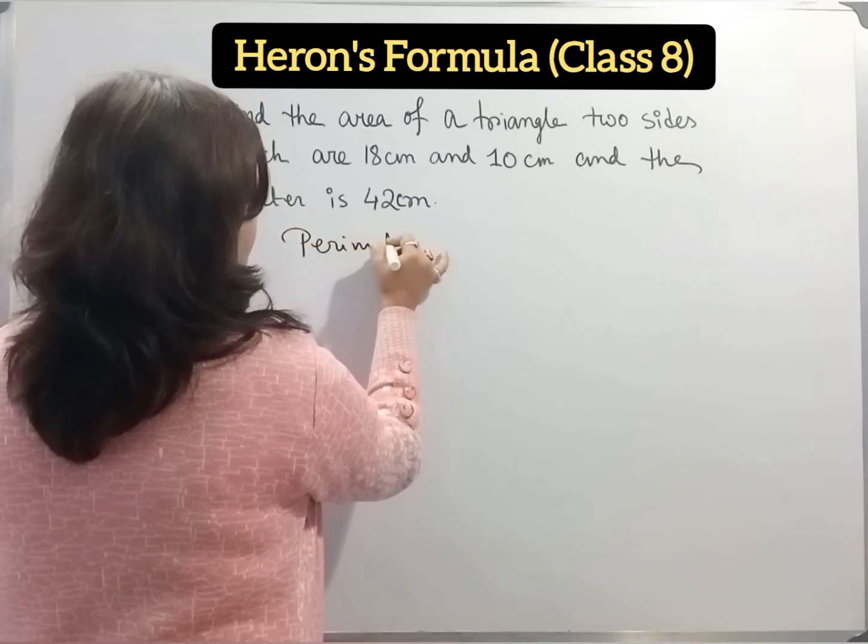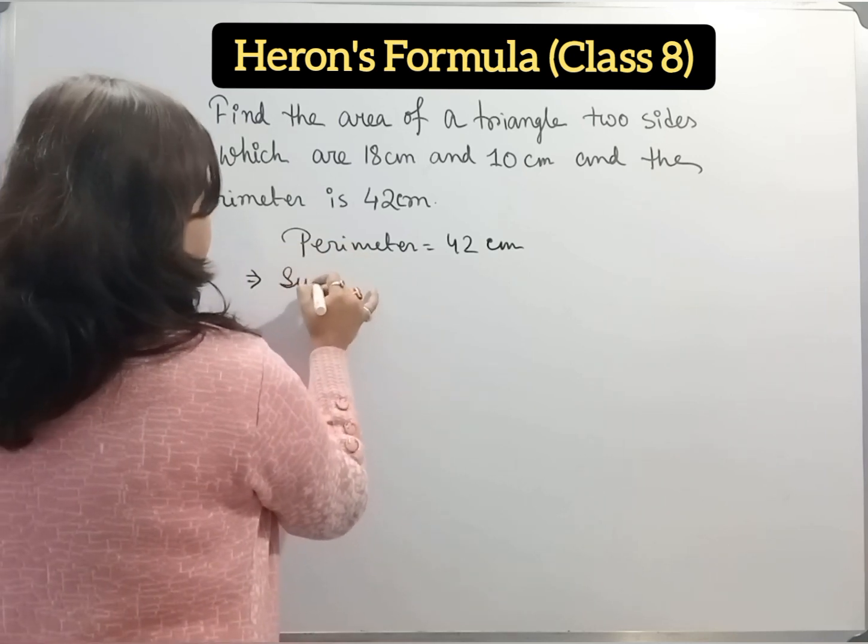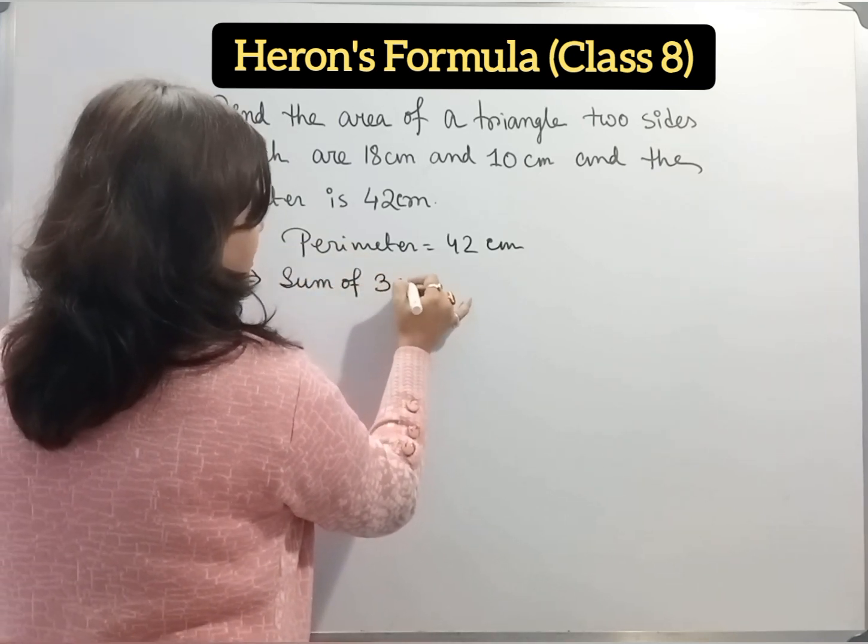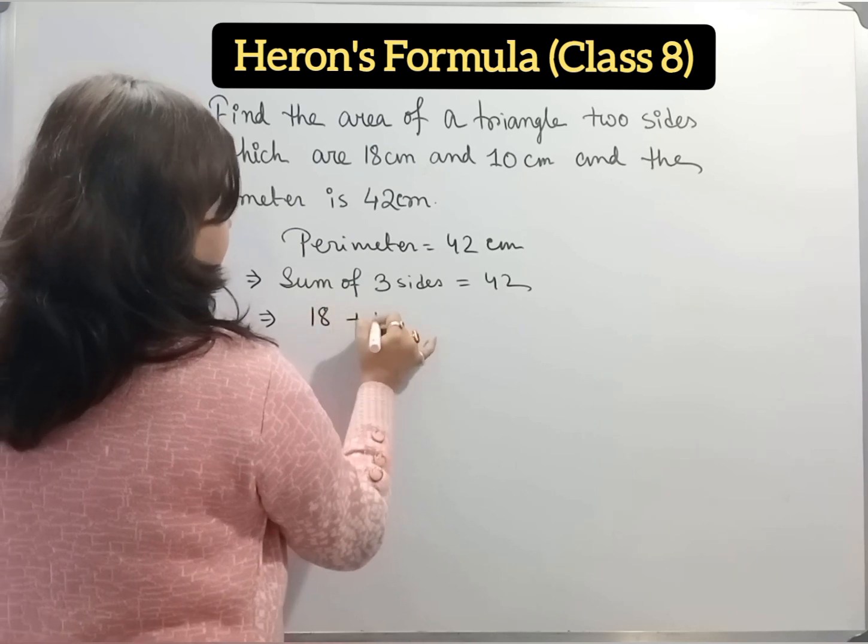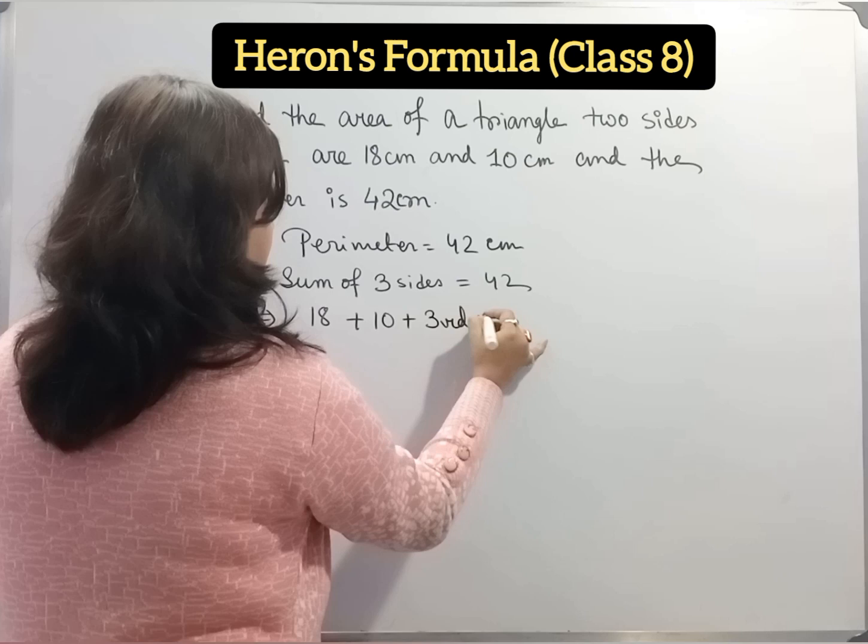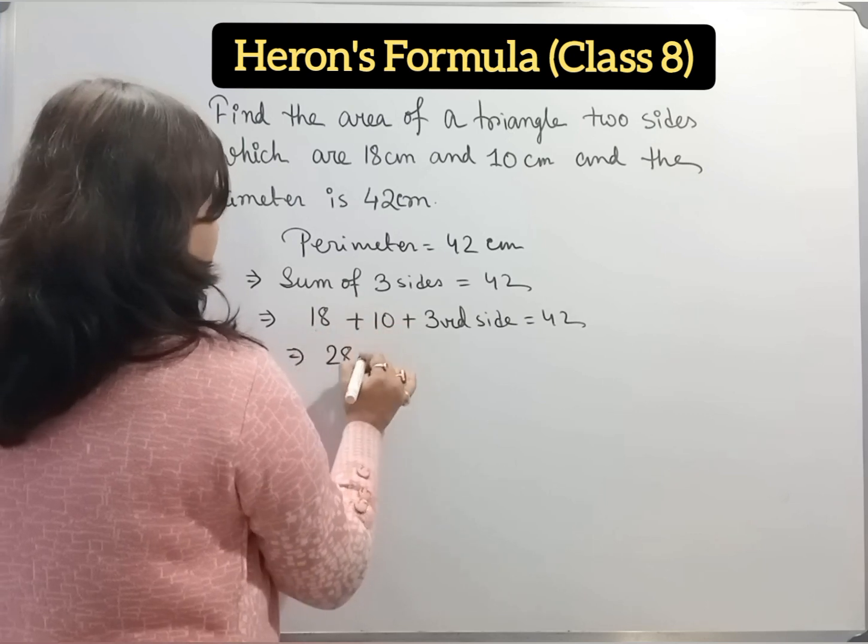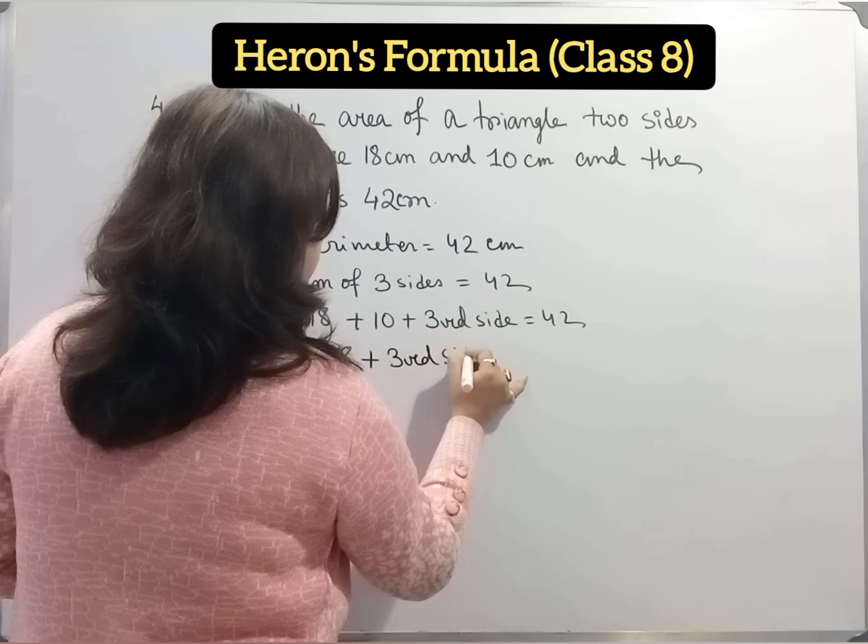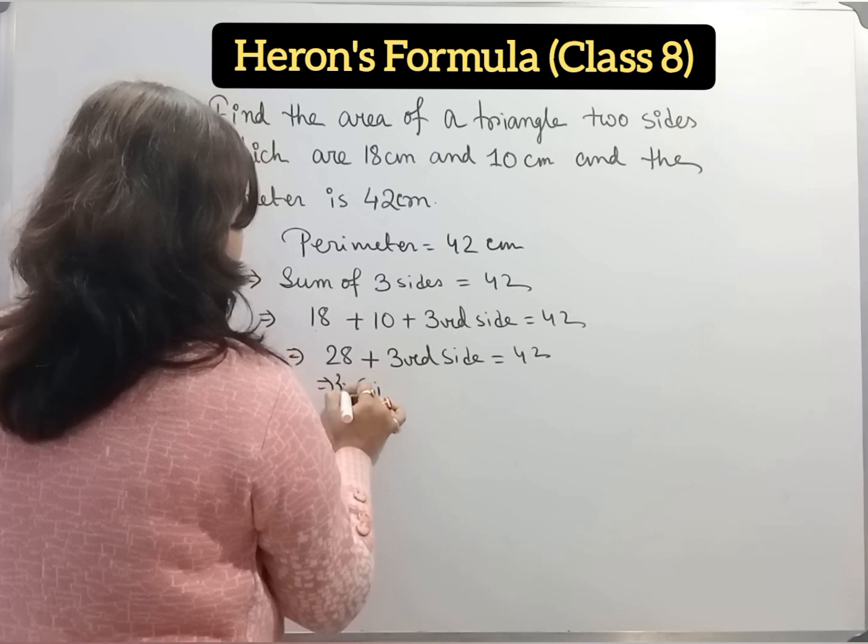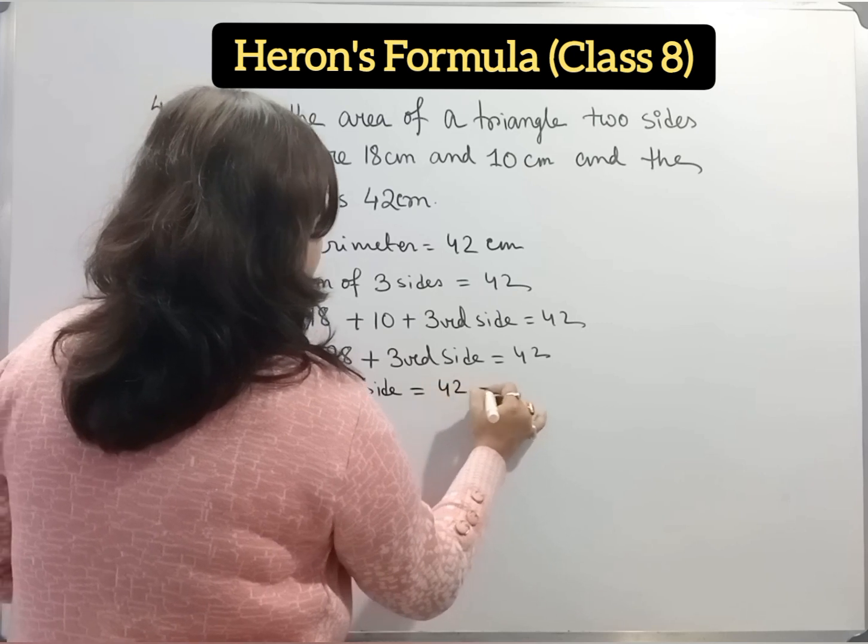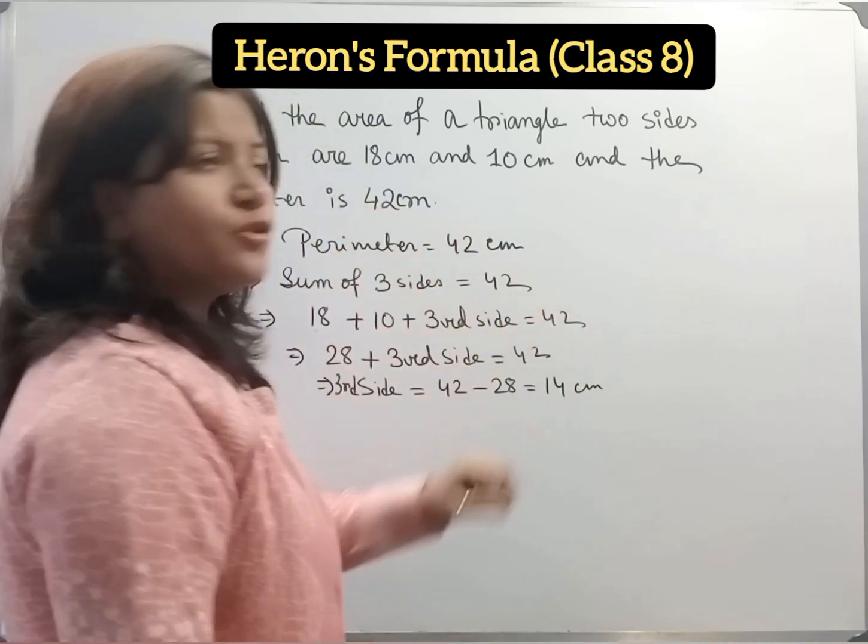Perimeter equal to 42 centimeter. Now perimeter means sum of 3 sides of triangle. Now one side is 18, another side is 10, and third side we don't know, equal to 42 centimeter. So 28, by adding 18 and 10 we get 28. 28 plus third side equal to 42. Or third side equal to 42 minus 28, which equal to 14. So 14 centimeter.